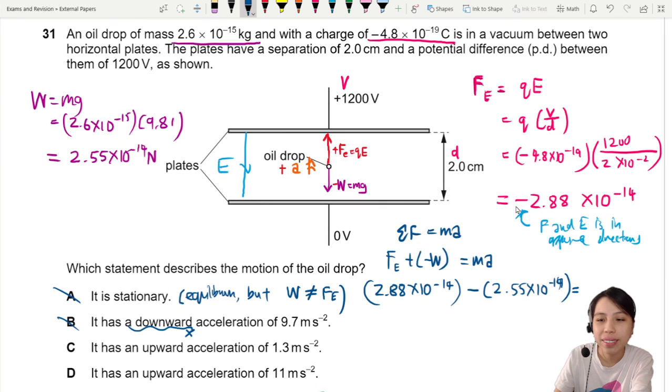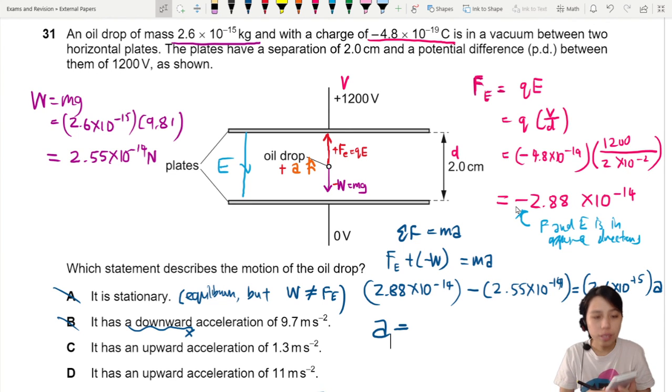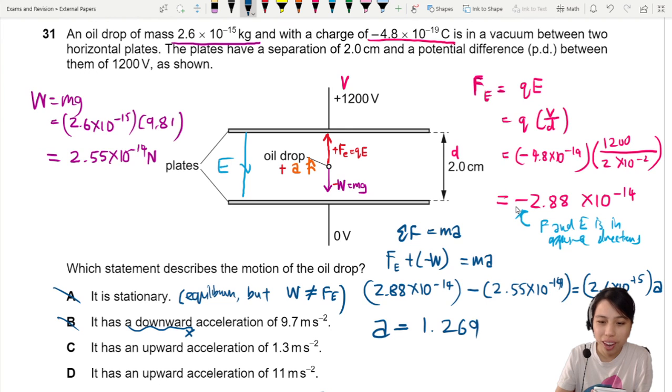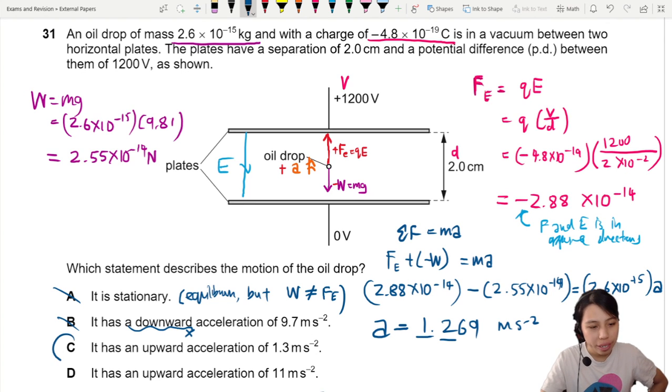Equals to mass 2.6 times 10 negative 15 times acceleration. What is the acceleration? I got 1.269 meters per second squared. That's not bad. We round it off to 2 significant figures you get 1.3 where C would be your best answer in this case. So that's all for this question I'll see you in the next one.